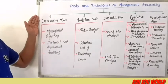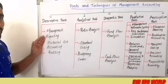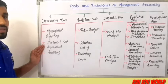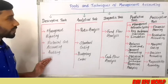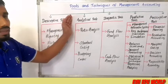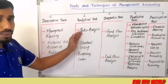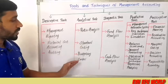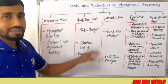The first category is descriptive tools, which includes management reporting, historical cost accounting, and auditing. Analytical tools involve ratio analysis, standard costing, and budgetary control.